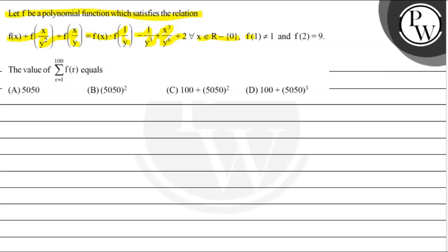It is given that f(1) is not equal to 1 and f(2) is equal to 9. We have to find the value of the summation of f(r) where r is from 1 to 100. The given options are: 5050², square of 5050; 100 plus square of 5050; and 100 plus cube of 5050.